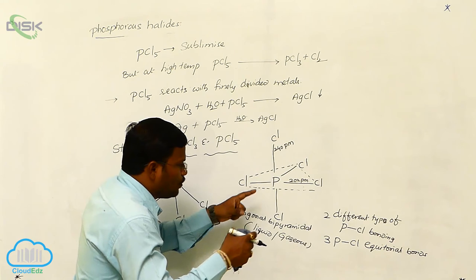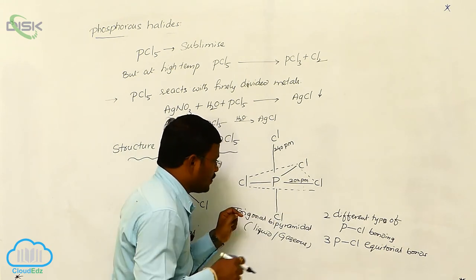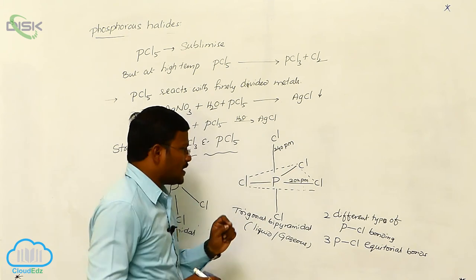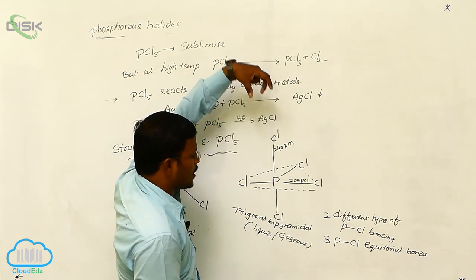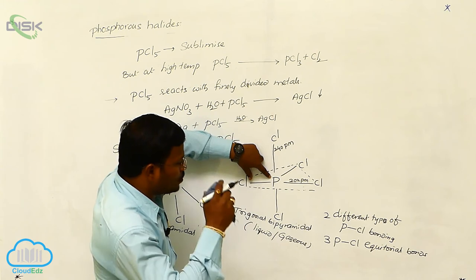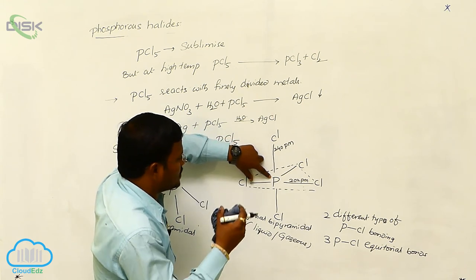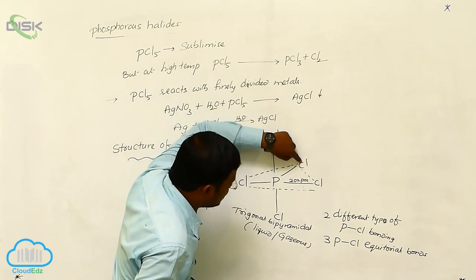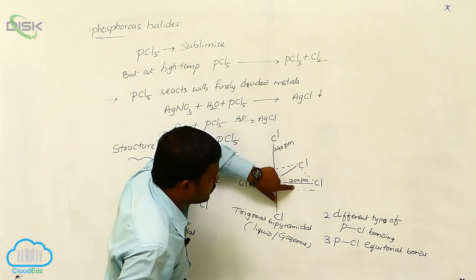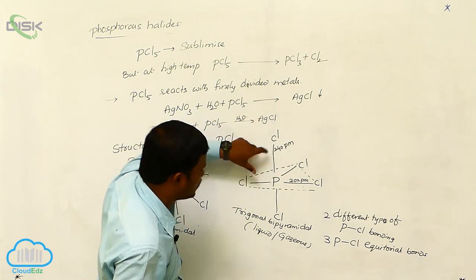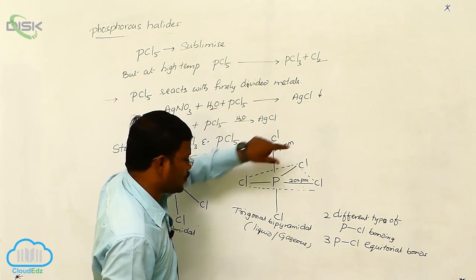When the three chlorines come close to phosphorus in a linear manner, less repulsion is expected between phosphorus and chlorine. Whereas when the two chlorines come from opposite directions, they show more repulsion with phosphorus. Hence the distance from phosphorus to these chlorines is close at 202 picometers, whereas the distance to the axial chlorines is greater at 240 picometers.